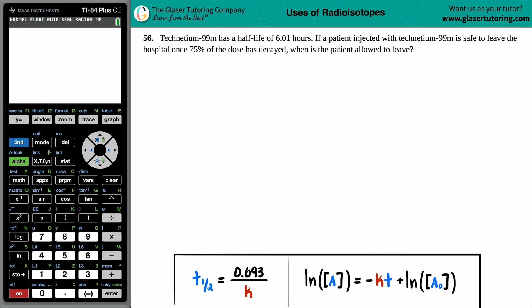Number 56: Technetium-99M has a half-life of 6.01 hours. If a patient injected with this technetium-99M is safe to leave the hospital once 75% of the dose has decayed, when is the patient allowed to leave?